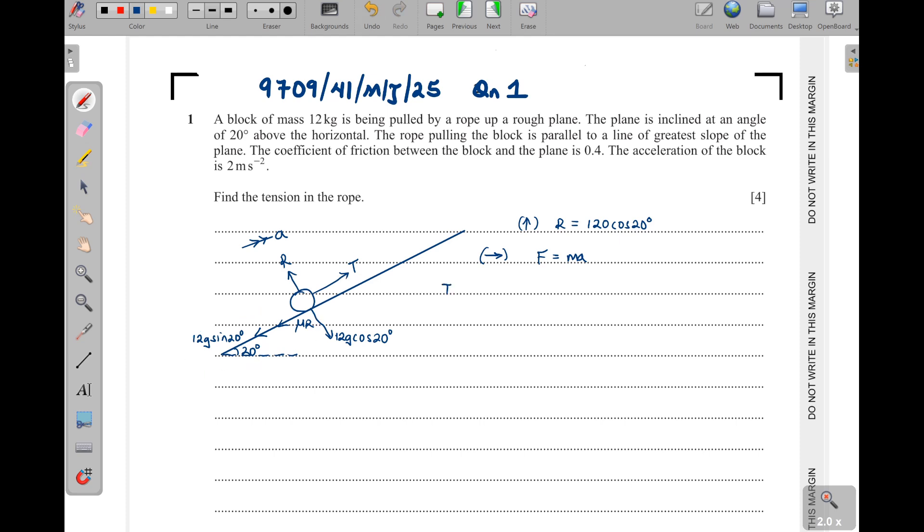So we shall have T, then minus 12g is the same as 120, then sine of 20, and then plus, we shall also subtract this μR, then we shall equate to ma.